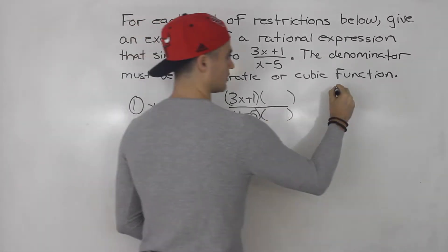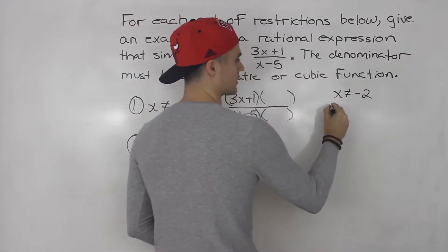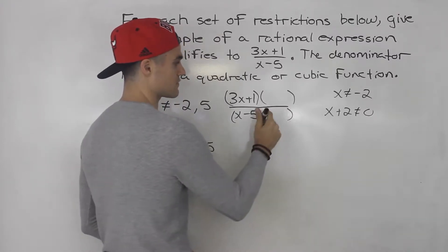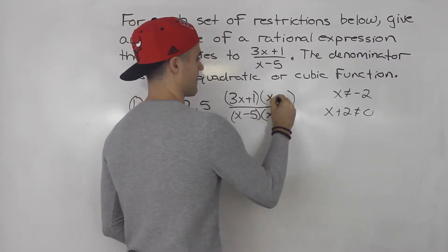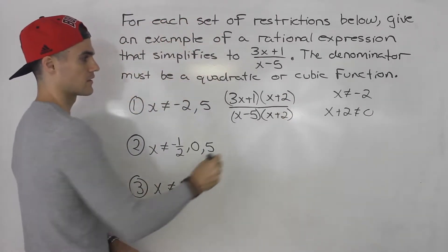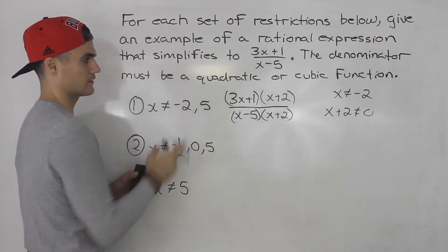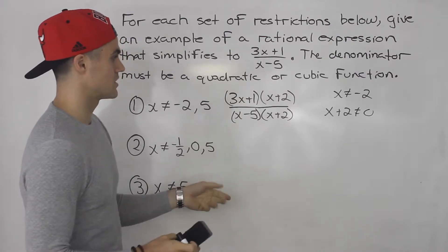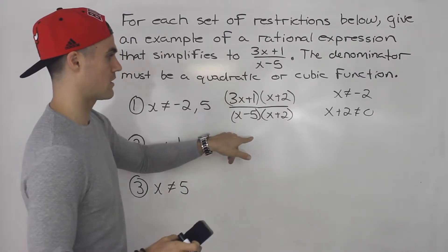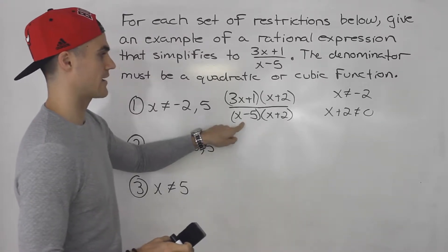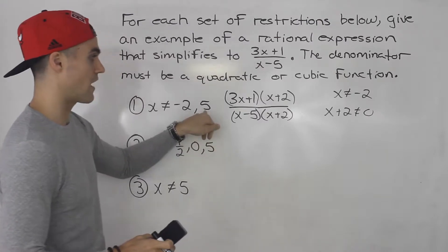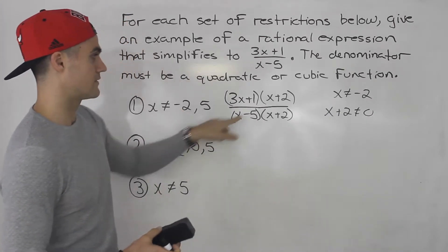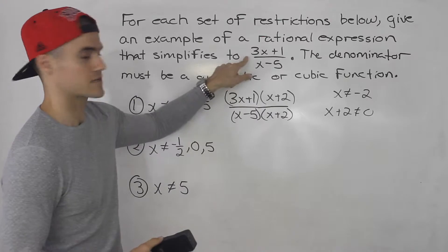x cannot equal negative 2 means x plus 2 cannot equal 0 — that's the factor that was there earlier and canceled. So if you're given this expression and asked to simplify and state restrictions, it's already factored. The restrictions would be: x minus 5 cannot equal 0, so x cannot equal 5, and x plus 2 cannot equal 0, so x cannot equal negative 2. Then the x plus 2 cancels out and we're left with (3x+1)/(x-5).